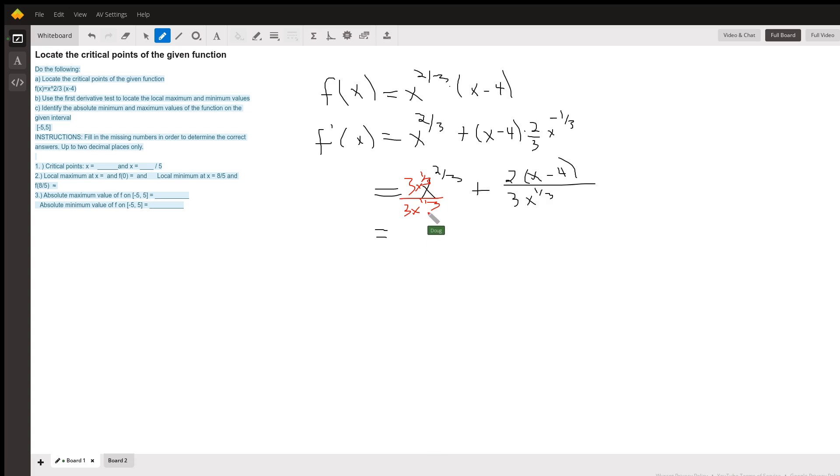3x to the one-third. I finally get 3x plus 2x minus 8 over 3x to the one-third, which is the same as 5x minus 8 over 3x to the one-third.